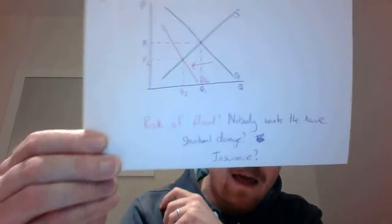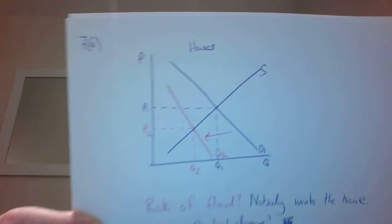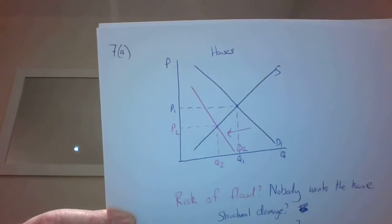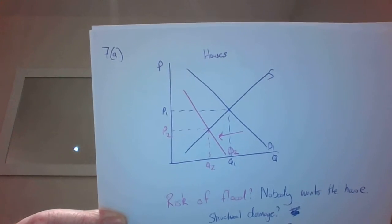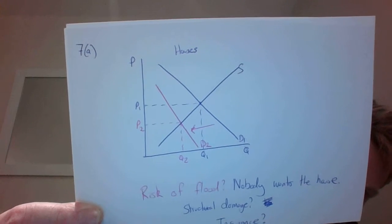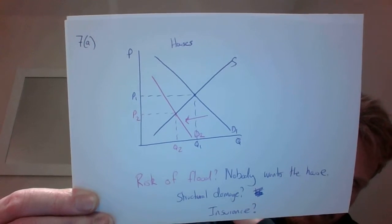So to begin with, 7a(i), we're just looking for influences on demand here, really. So you'd want to have a supply and demand diagram, and you want to just say that demand is affected because of,